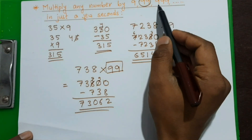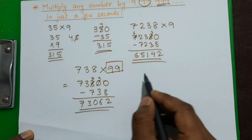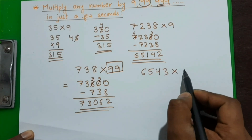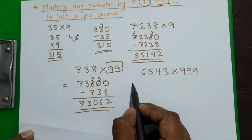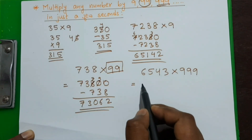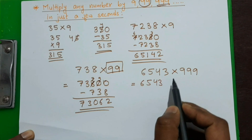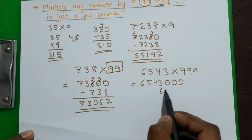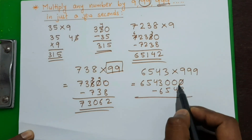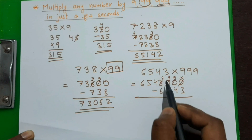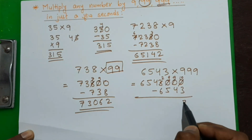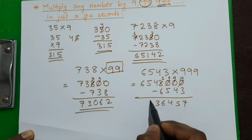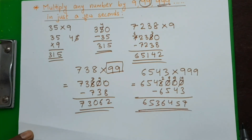Now let's do multiplication by 999. Take the number 6543 and multiply it by 999. First step: multiply by 1000, putting three zeros — 6543000. Now subtract the original number 6543. This becomes 10, 9, 9 — so 10 minus 3 is 7, 9 minus 4 is 5, 9 minus 5 is 4, 12 minus 6 is 6, giving us 6536457. This method is very fast compared to the usual method.